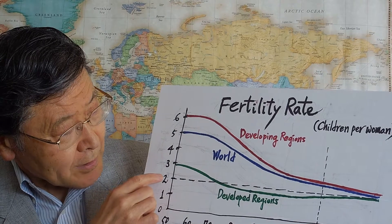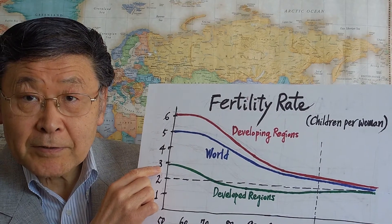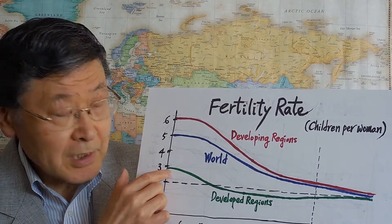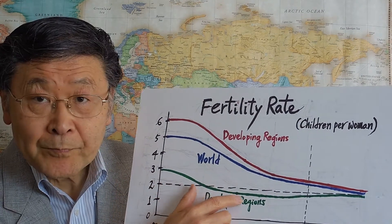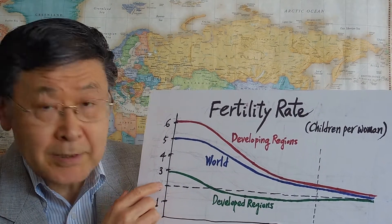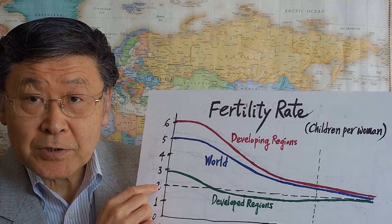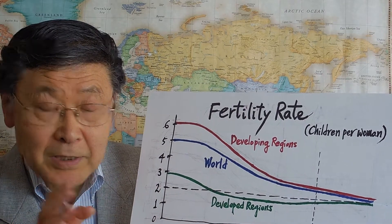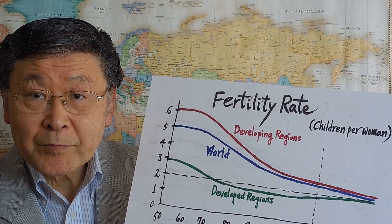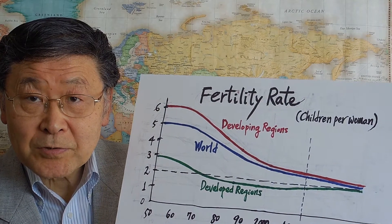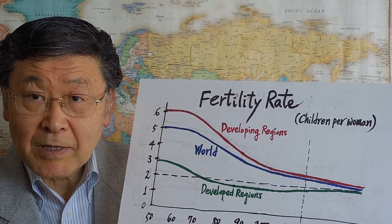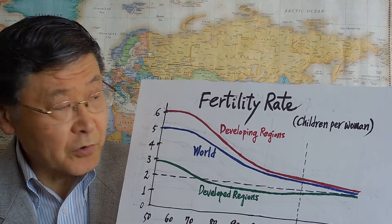The fertility rate in the developed countries has been fairly low all along — actually less than 2.0, which is below the simple reproduction level. Now it is backing up toward 2.0. So there is a kind of convergence in the fertility rate among various countries in the world.